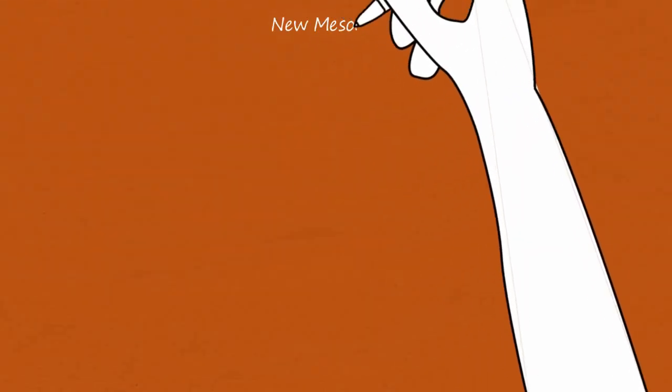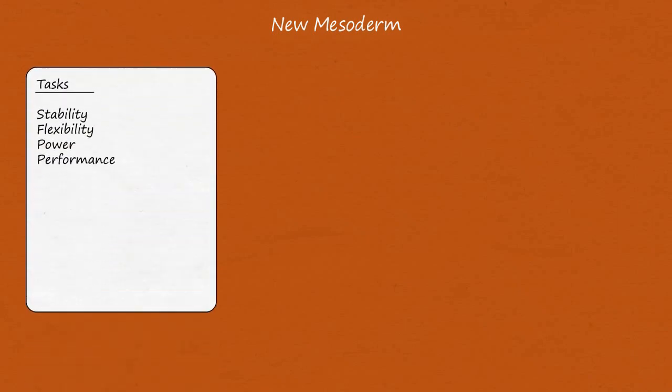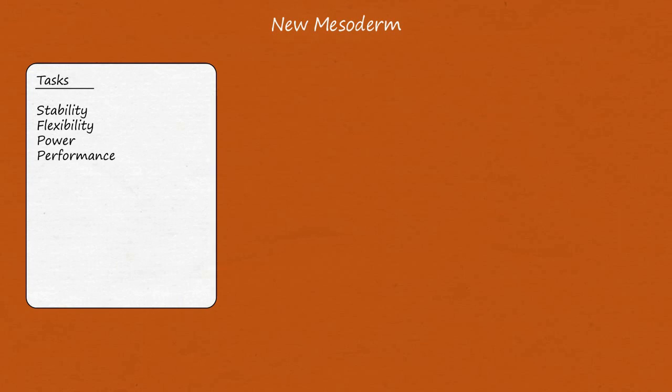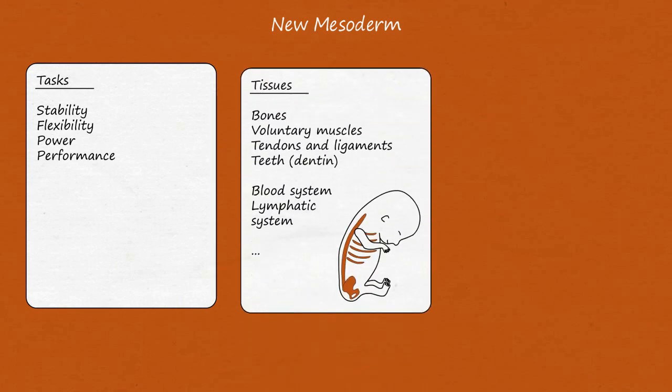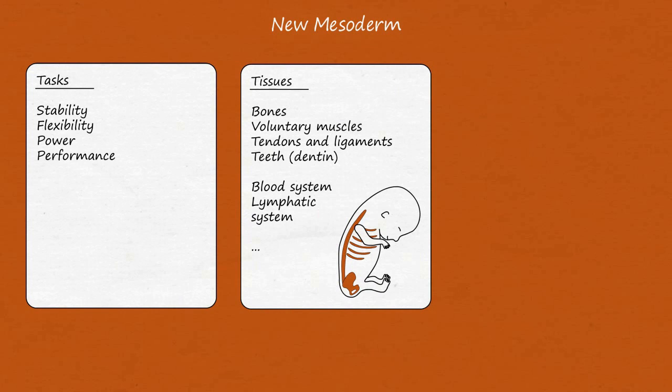The new mesoderm develops into the tissues of the entire supporting and attachment apparatus, providing stability, flexibility, power, and performance. These include all bones, voluntary muscles, tendons and ligaments, the dentin of the teeth, and the blood and lymphatic system.